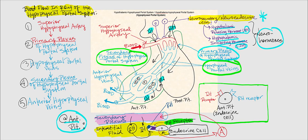Hormone A will circulate because it is now officially in the circulatory system. It will leave the anterior pituitary through the anterior hypophysial veins, and then ultimately back to the heart, which will pump it systemically.